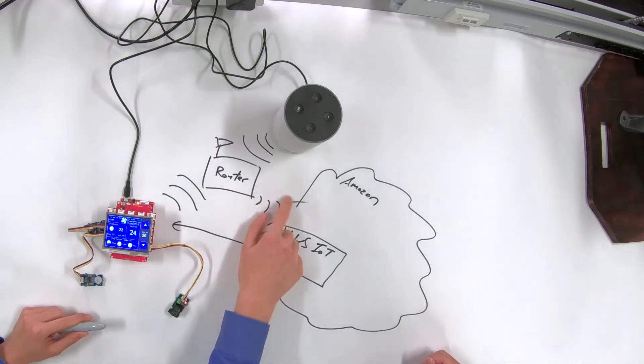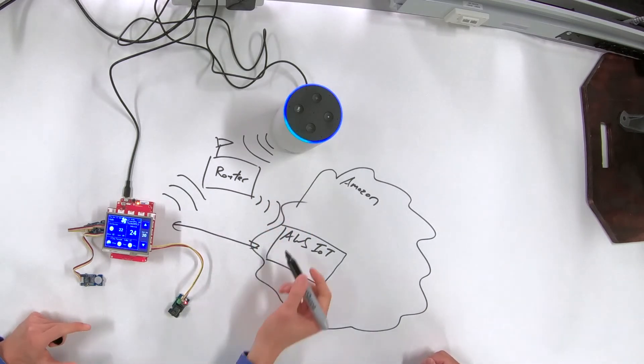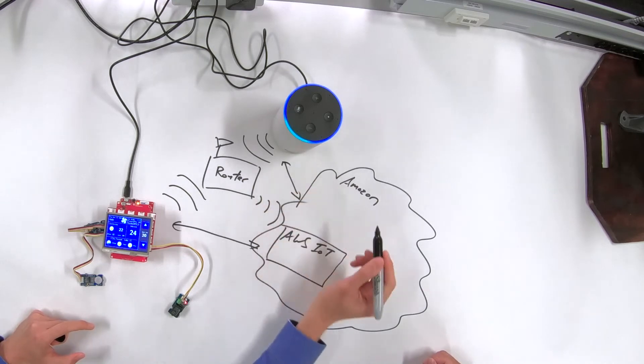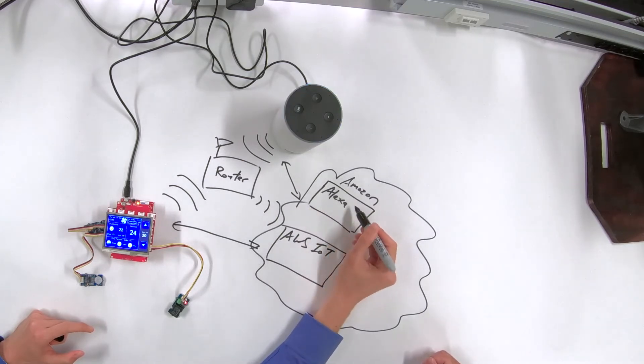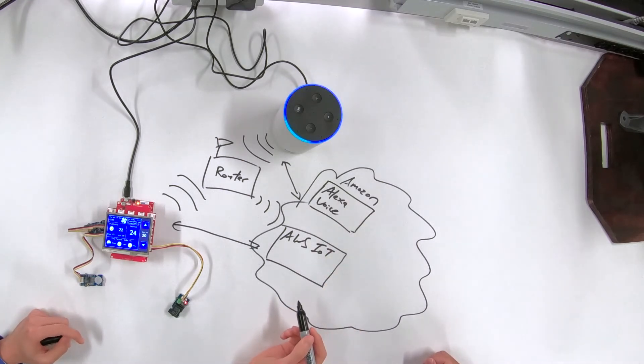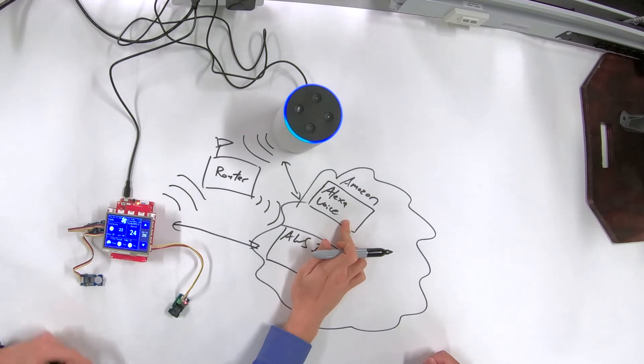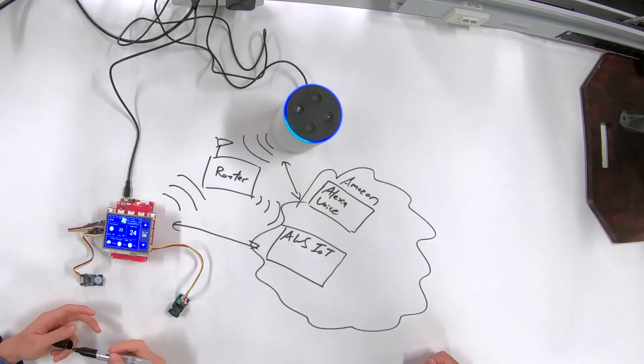Yeah. So the way the Alexa plays into this is that this also talks to the Amazon cloud, of course. But this goes to the Alexa voice services piece. So Alexa voice services. And so this is what actually decodes the intent of a person's command. So when I tell it to increase the temperature in the thermostat, it'll actually take the raw audio and then run it through some algorithm to determine what exactly I want it to do.